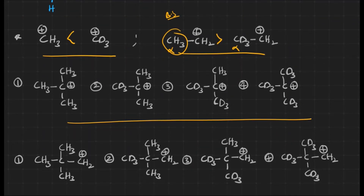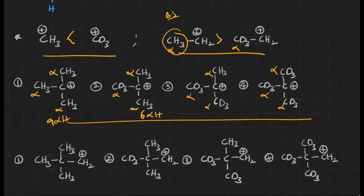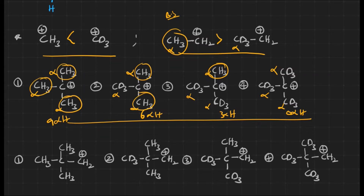Now consider carbocations where the number of alpha hydrogens decreases from left to right: nine, six, three, and zero alpha hydrogens. As the number of alpha hydrogens decreases, the number of hyperconjugations decreases, and the stability of the carbocation also decreases. So the stability order going from left to right is: structure 1 > 2 > 3 > 4.